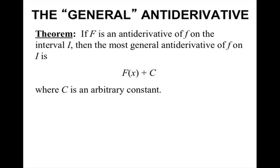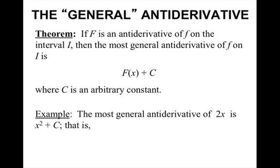The general antiderivative theorem: if big F is an antiderivative of little f on the interval I, then the most general antiderivative of little f on I is F(x) plus C, where C is an arbitrary constant. The reason why we have this plus C is because if we were to take the derivative, the derivative of big F would be little f, and the derivative of a constant is zero. So the most general antiderivative of 2x is x squared plus C — that is, the integral of 2x dx equals x squared plus C — because if we take the derivative of x squared plus C, we still get 2x.